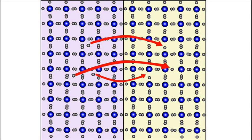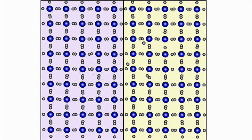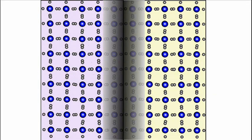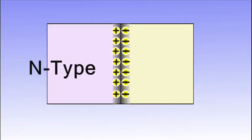The electrons diffuse from N-side to P-side, and holes diffuse from P-side to N-side through the junction. This creates a depletion zone at the junction and acts as a barrier, creating positive ions on the N-side and negative ions on the P-side.